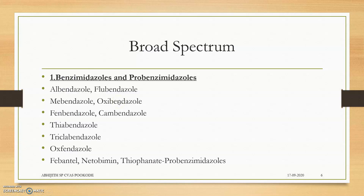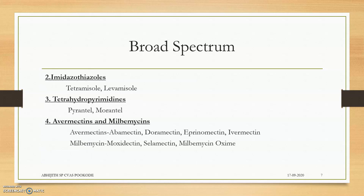Moving to the broad spectrum: the first group is benzimidazoles or probenzimidazoles. They belong to a class of drugs having a benzene ring and an imidazole ring. Examples include albendazole, flubendazole, mebendazole, oxibendazole, fenbendazole, cambendazole, thiabendazole, triclabendazole, and oxfendazole.